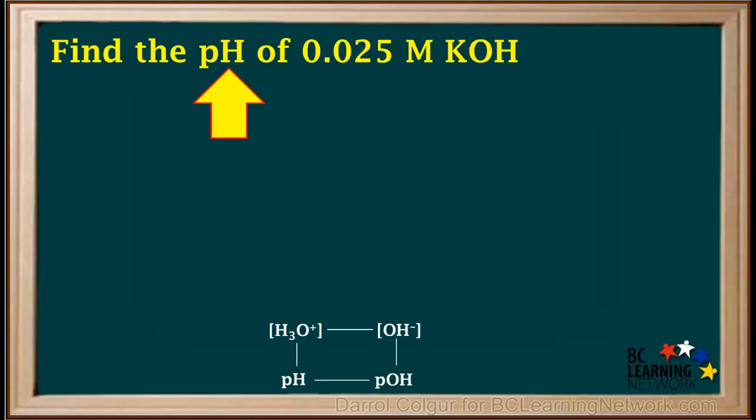Here's the simpler version we can use. Here's an example question. We're asked to find the pH of 0.025 molar KOH.